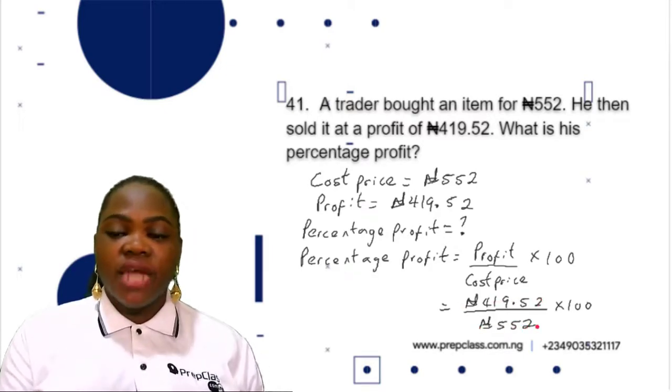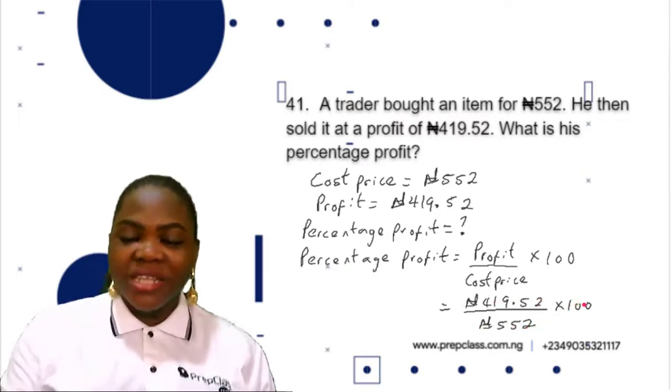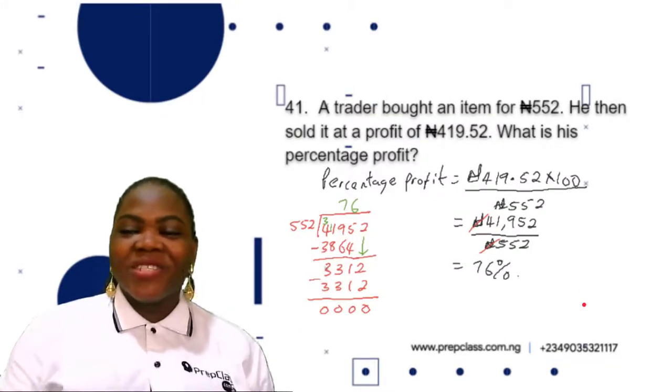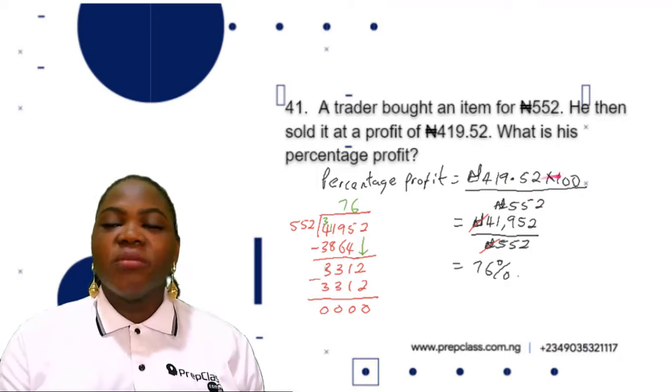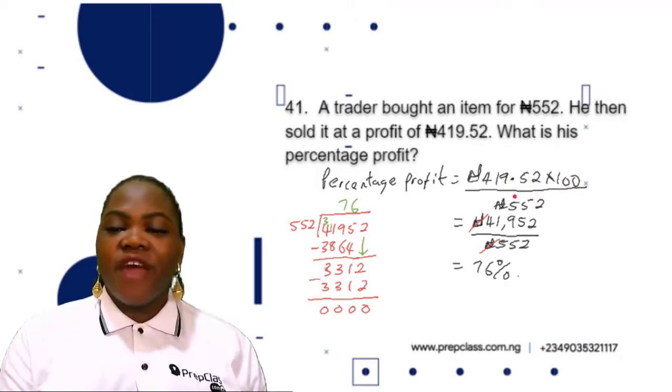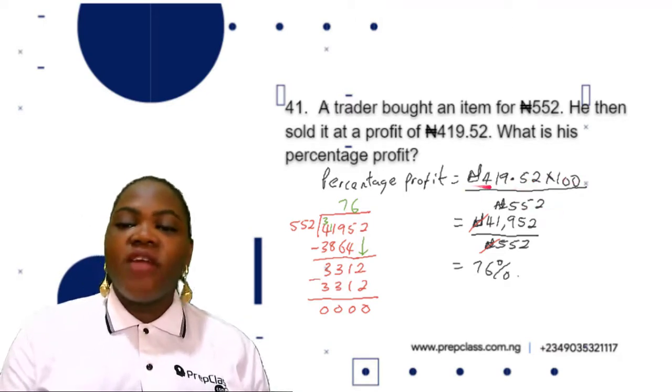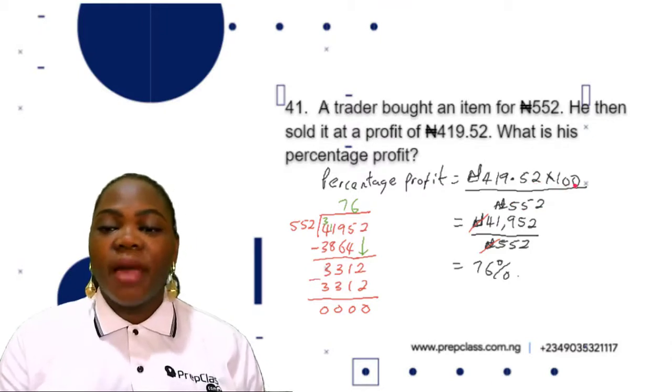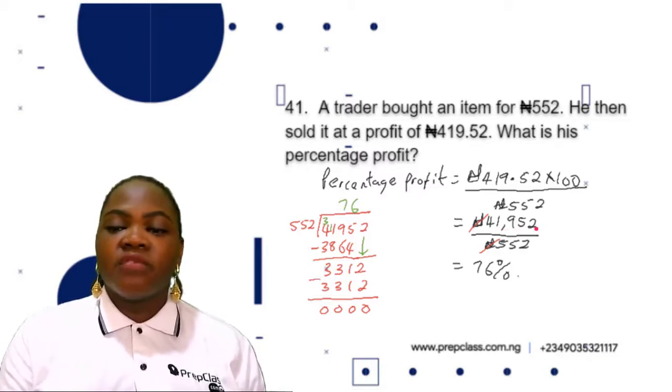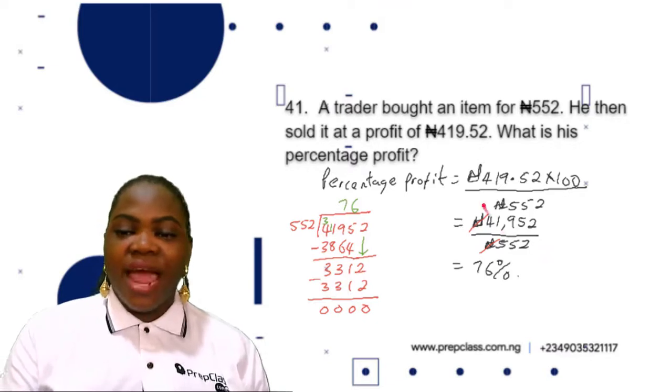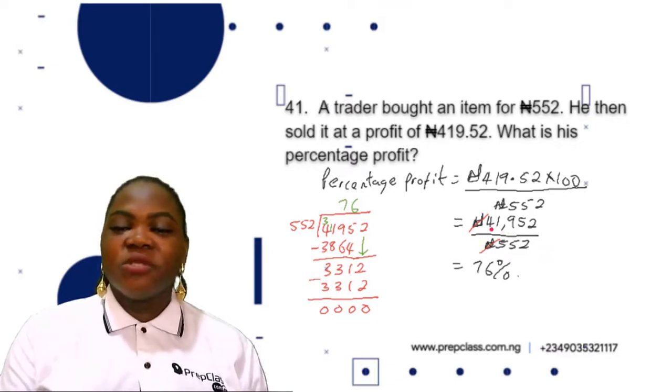The profit is ₦419.52 divided by ₦552 multiplied by 100. So we have ₦419.52 multiplied by 100 divided by ₦552. Naira cancels naira, so we are left with 41,952 divided by 552.